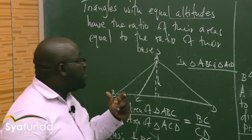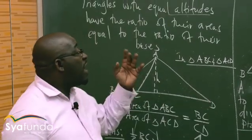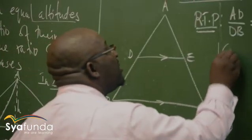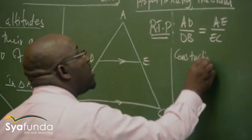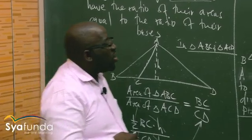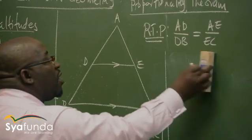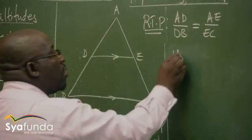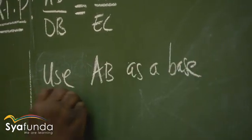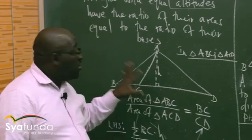I want to have this scenario in this theorem. In other words, this side was the base in this particular case, and I want to have that in this theorem. Now, I want to use AB as a base. In the first part, I just want to use the side AB as my base. Remember, in this particular problem, the base was BC.